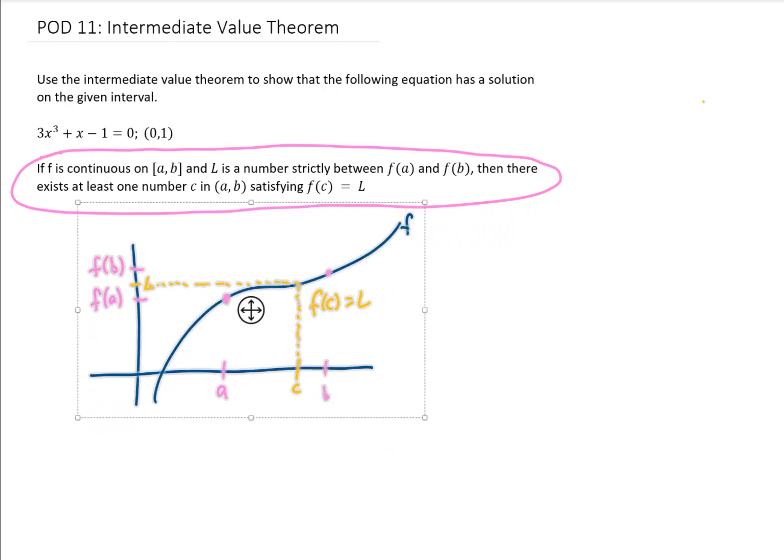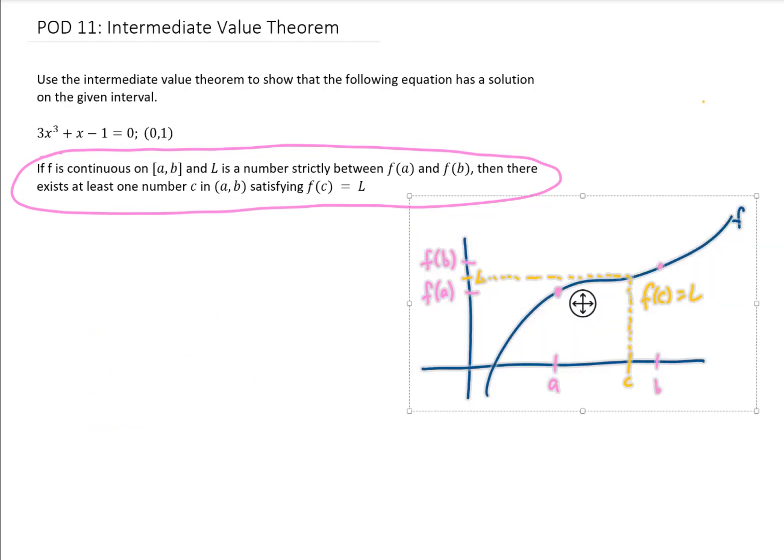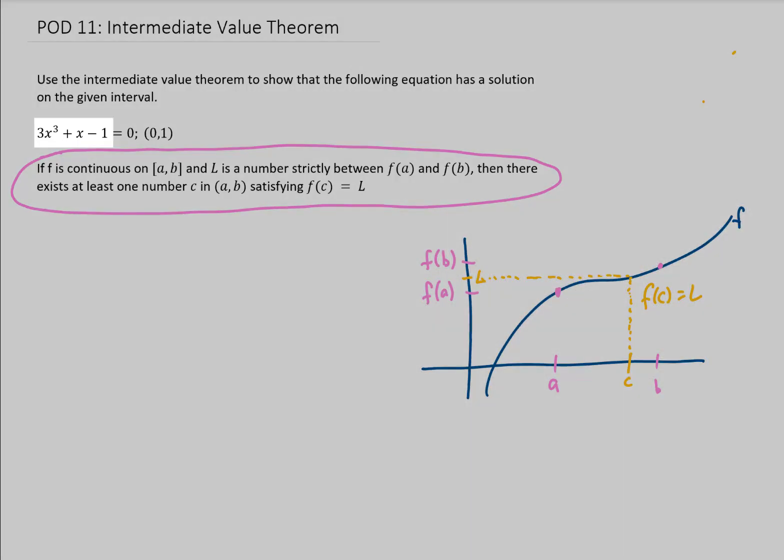Now I'm going to shrink this graph down a little bit here. I'm going to move it to the side and make some space for our problem. In our problem, we're given a function 3x³ + x - 1. And we're wondering where this function equals 0.